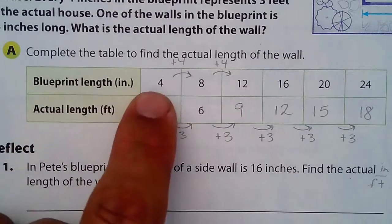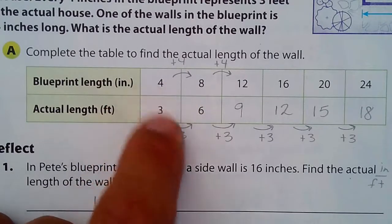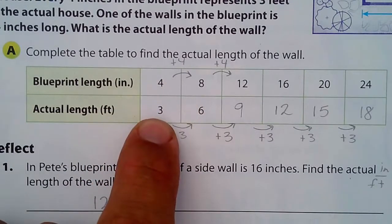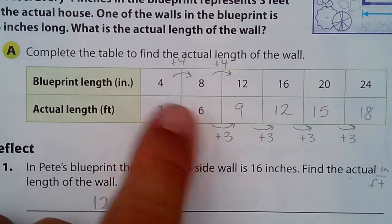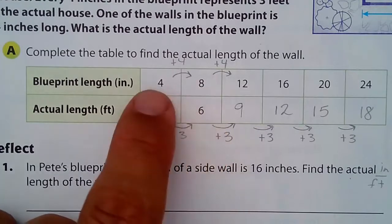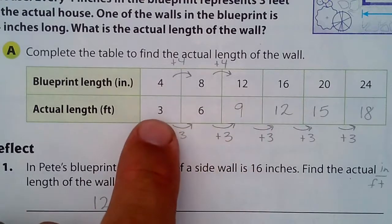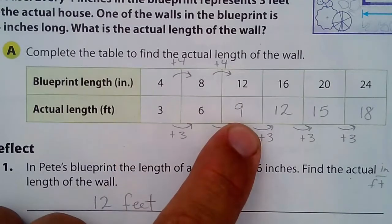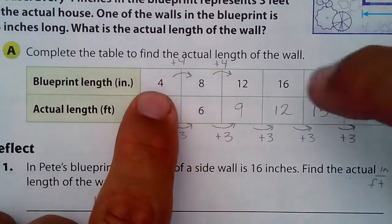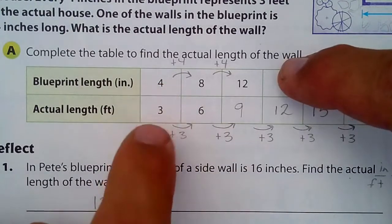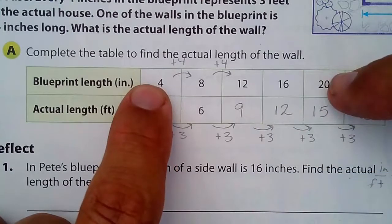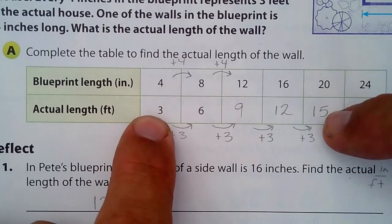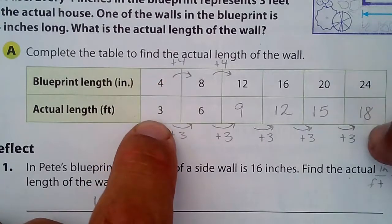In this table, four inches represents three feet. If I double this number, I would have to double this number. If I triple this to 12, I triple the other to 9. If I multiply by four, I get 16 inches and 12 feet. By five, I get 20 and 15. By six, I get 24 and 18. Each time you add four inches, you have to add three feet.